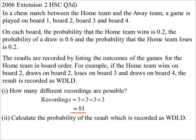Calculate the probability of the result which is recorded as win, draw, loss, draw. So the specific one of win, draw, loss, draw. Well, win on board one was 0.2, draw on board two 0.6, loss on board three 0.2, and draw on the last board 0.6. So 0.0144.